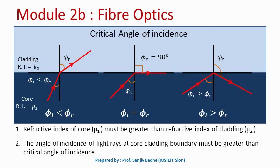For total internal reflection to occur, the angle of incidence must be greater than the critical angle of incidence. And secondly, the angle of refraction will be greater than the angle of incidence only if the core refractive index is greater than the cladding refractive index. This is the reason why core refractive index must be greater than cladding refractive index — then only the angle of refraction will be greater than angle of incidence and we can achieve total internal reflection.